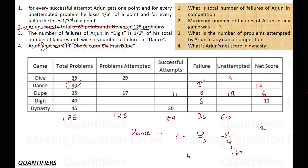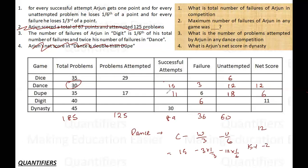The unattempted value must give an integer net score, so let me try unattempted = 12, which gives attempted = 18, and within those, correct = 15 and wrong = 3. Checking: 15 − 3×(1/3) − 12×(1/6) = 15 − 1 − 2 = 12. Yes, this satisfies the criteria. So Dance: correct=15, wrong=3, unattempted=12, score=12. This is complete.